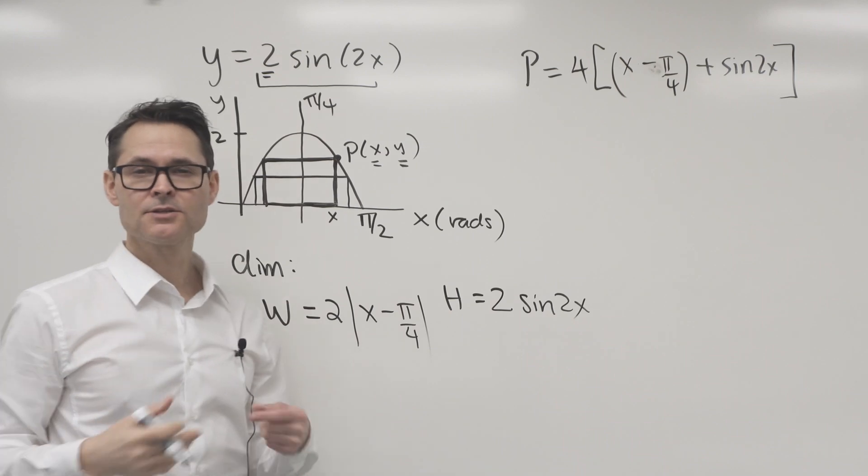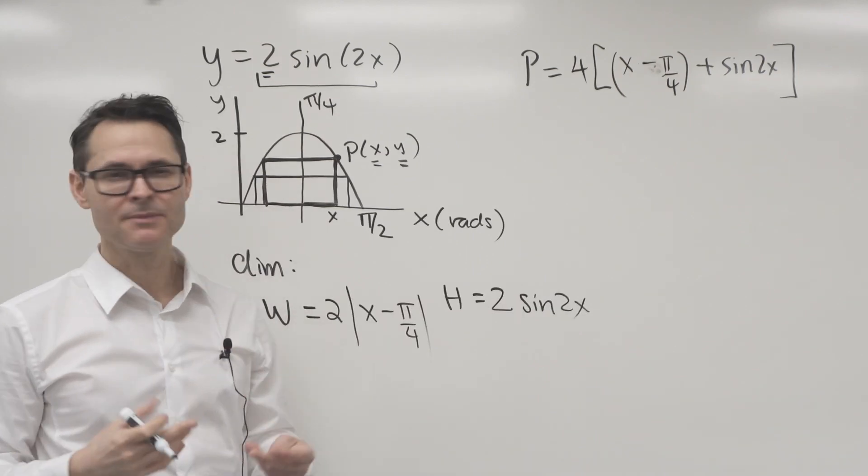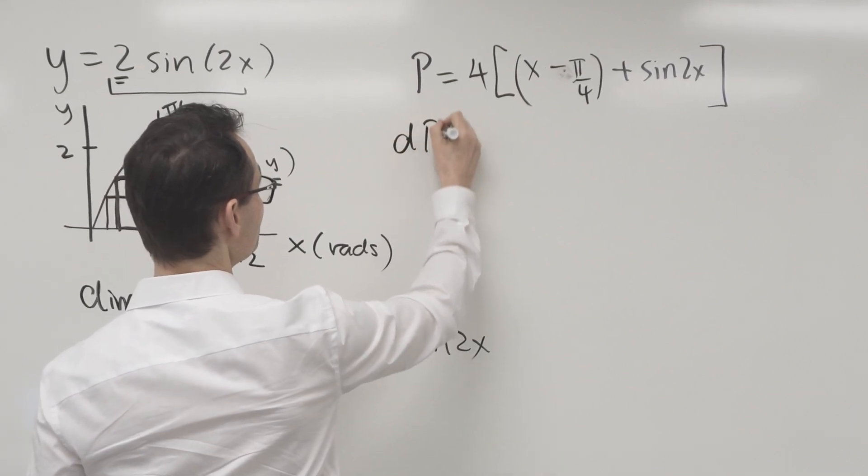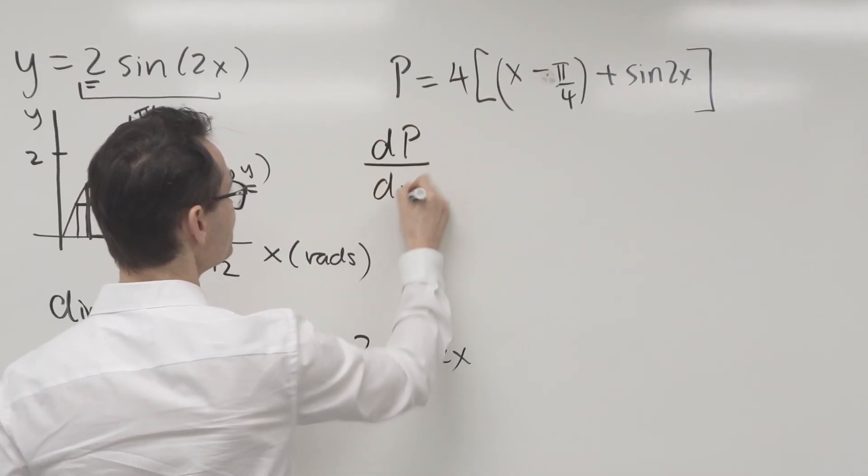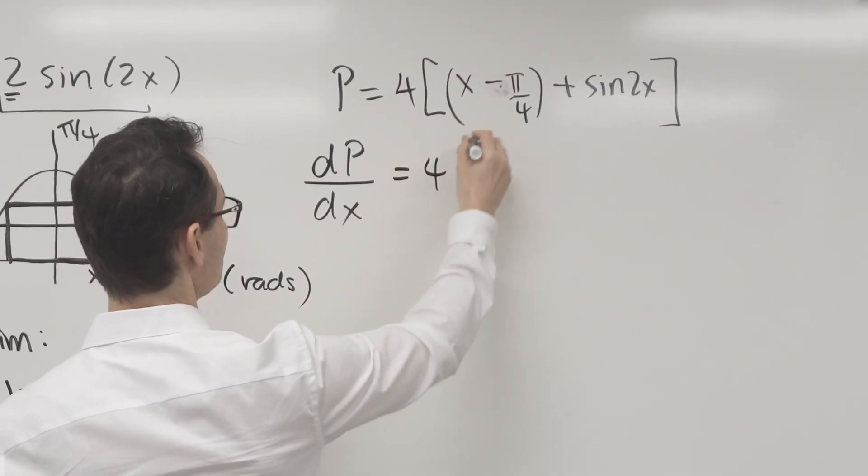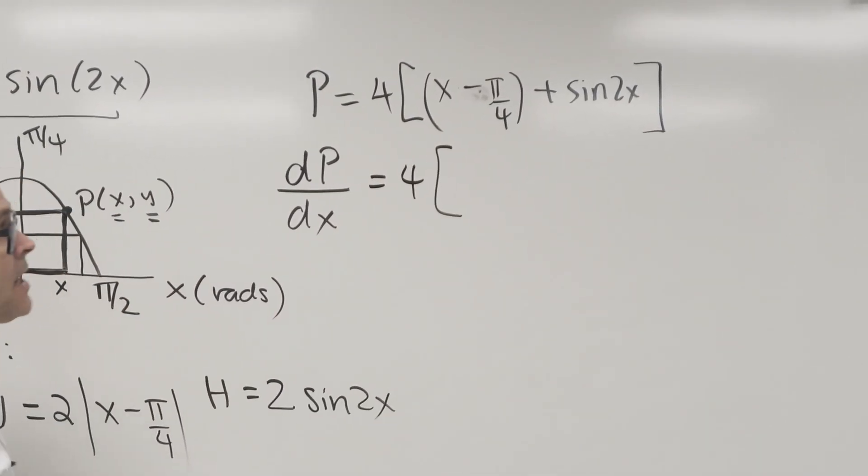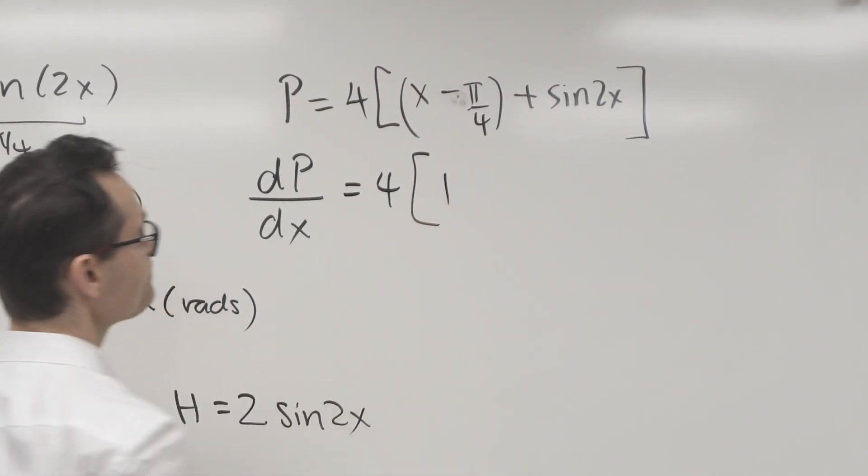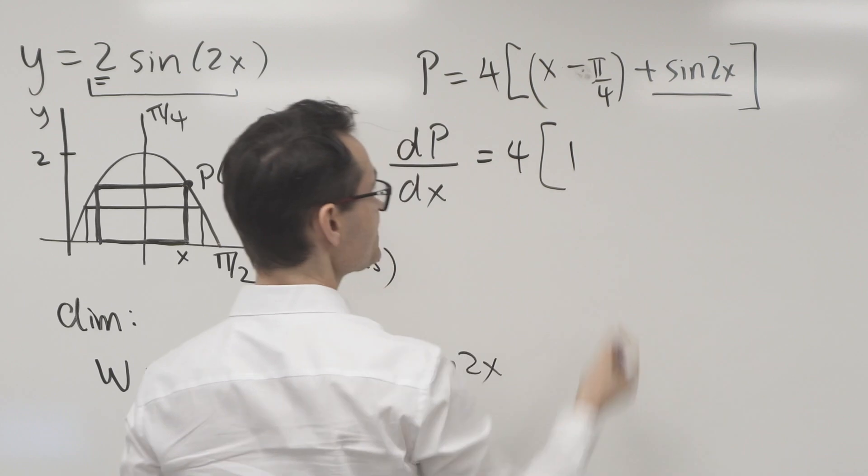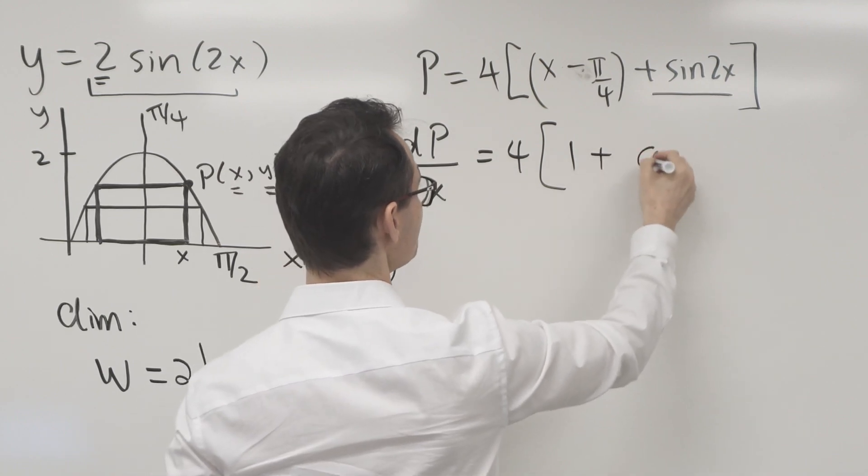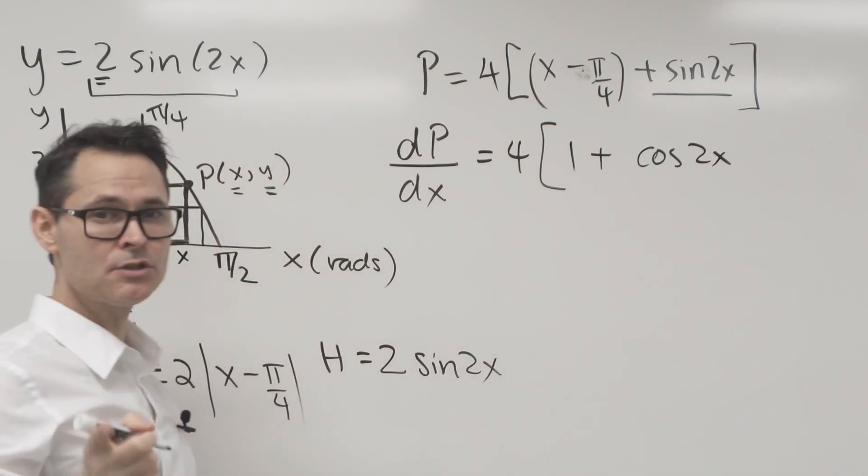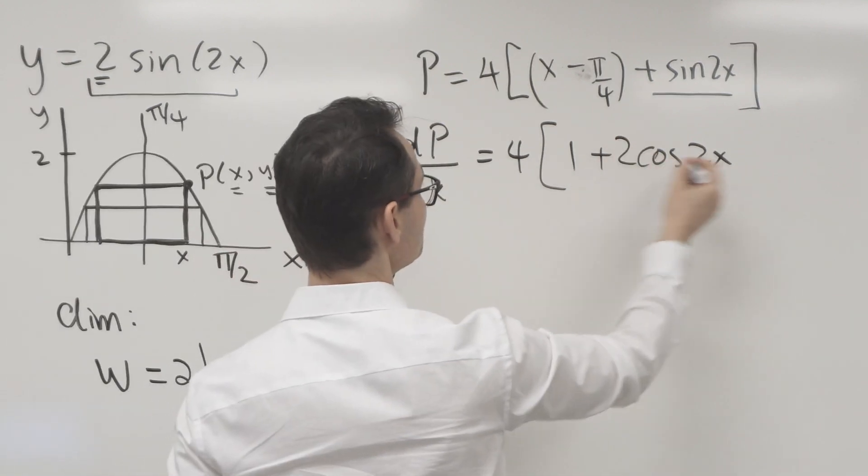I want to optimize. As soon as we use the word optimize or maximize, we're talking about differentiation. So the derivative of the perimeter function with respect to our independent variable x is going to be equal to four times the derivative of the inside. The derivative of x is one, the derivative of a constant is zero, and the derivative of this is cosine two x multiplied by the inside function. Don't forget the chain rule, and I'm going to get a two here.